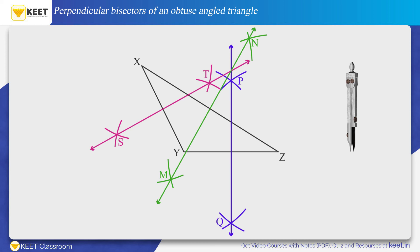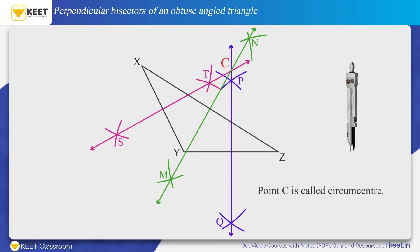Thus, PQ, ST, and MN are the perpendicular bisectors of the three sides of triangle XYZ. These perpendicular bisectors meet at a point outside the triangle. Name this point as C. Thus, point C is called the circumcenter.